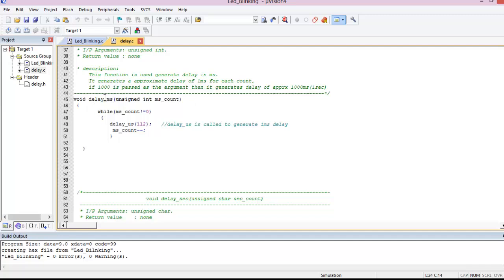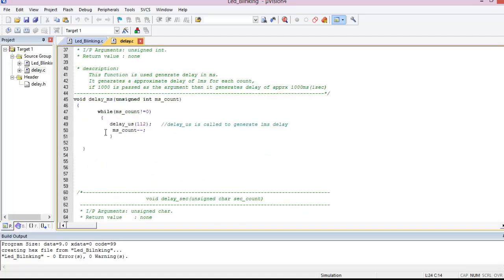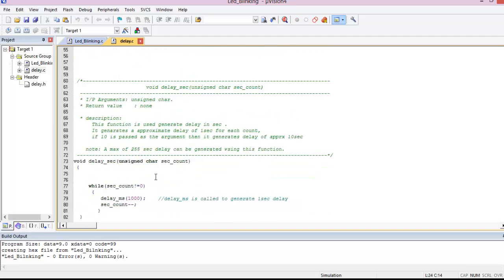Whereas the delay_milliseconds generates the exact milliseconds that we give as input to this function. If we give 10 milliseconds, it generates a delay of 10 milliseconds. What this basically does is, whatever count we give, it waits till the count becomes zero. Internally, it calls the delay_microsecond function with a value of 112, which when compiled gives a delay of one microsecond. Similarly, there is a delay_second function which generates a delay of about one second.